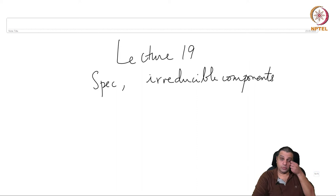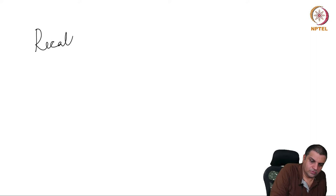Welcome. This is lecture 19. We look at the spectrum of a ring, irreducible components of spectrum, and we will also look at a couple of examples in Macaulay.